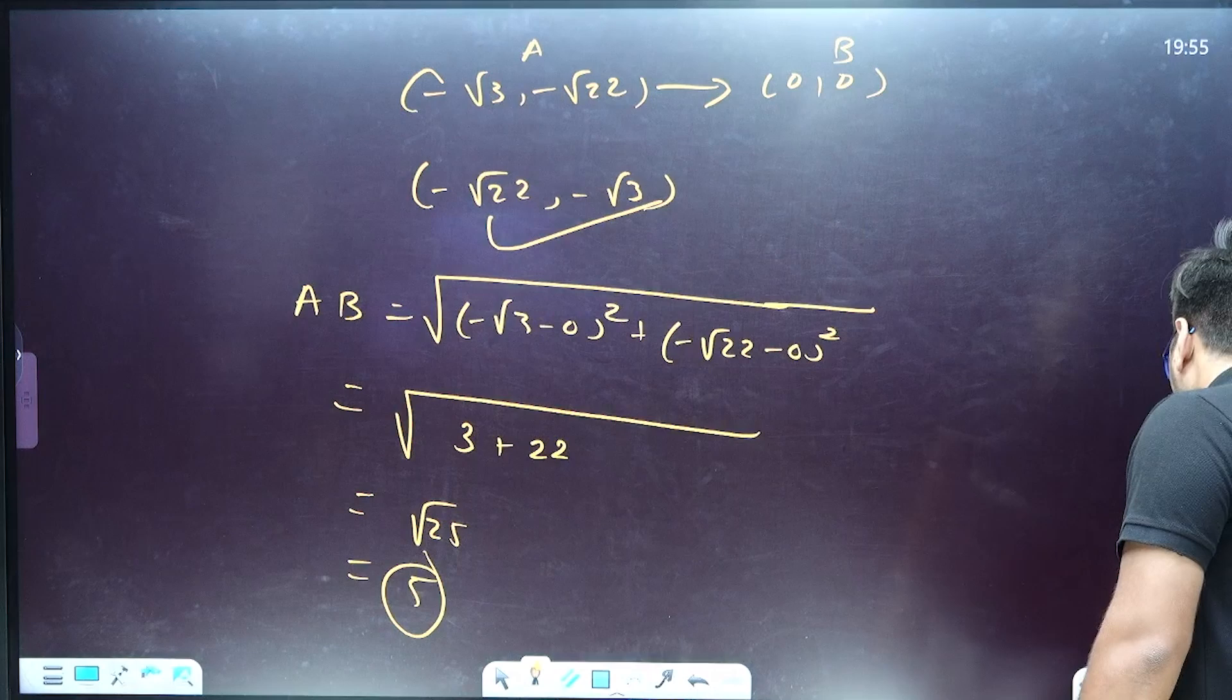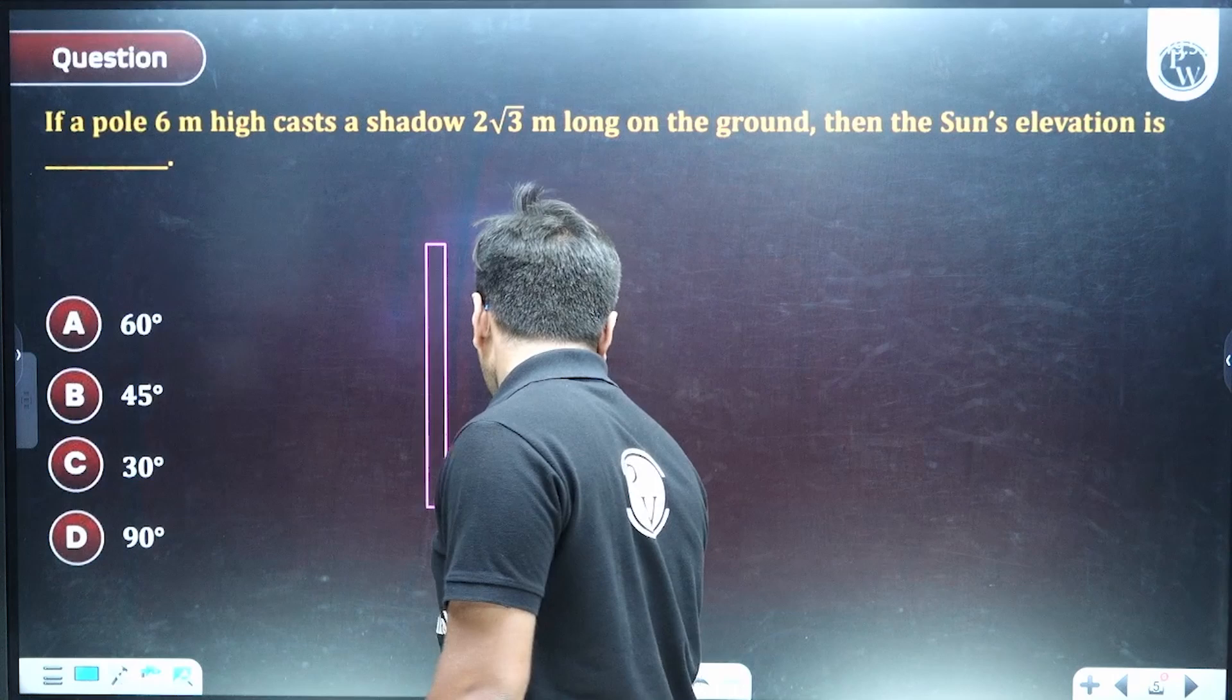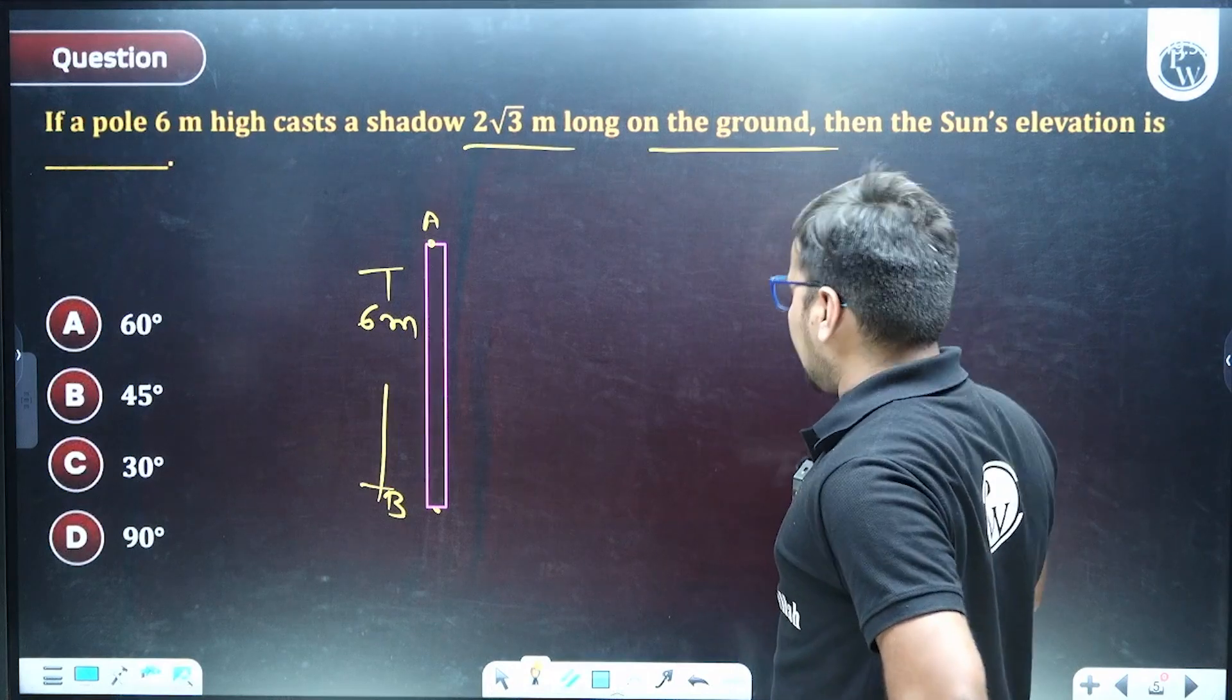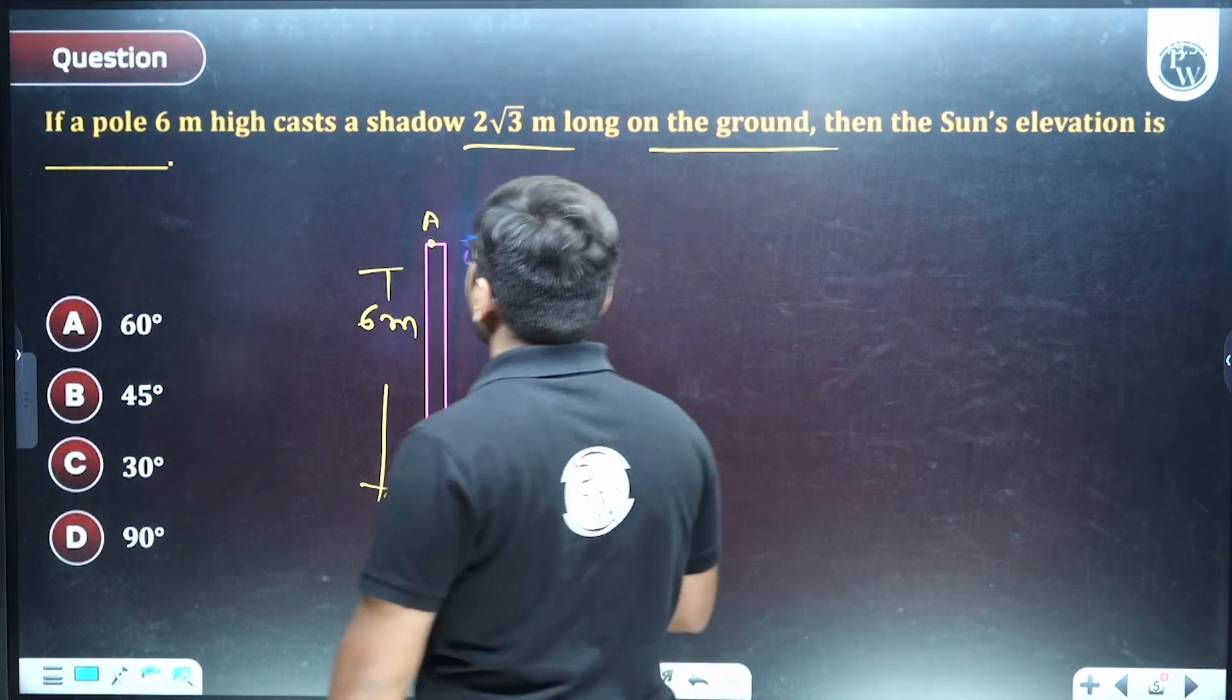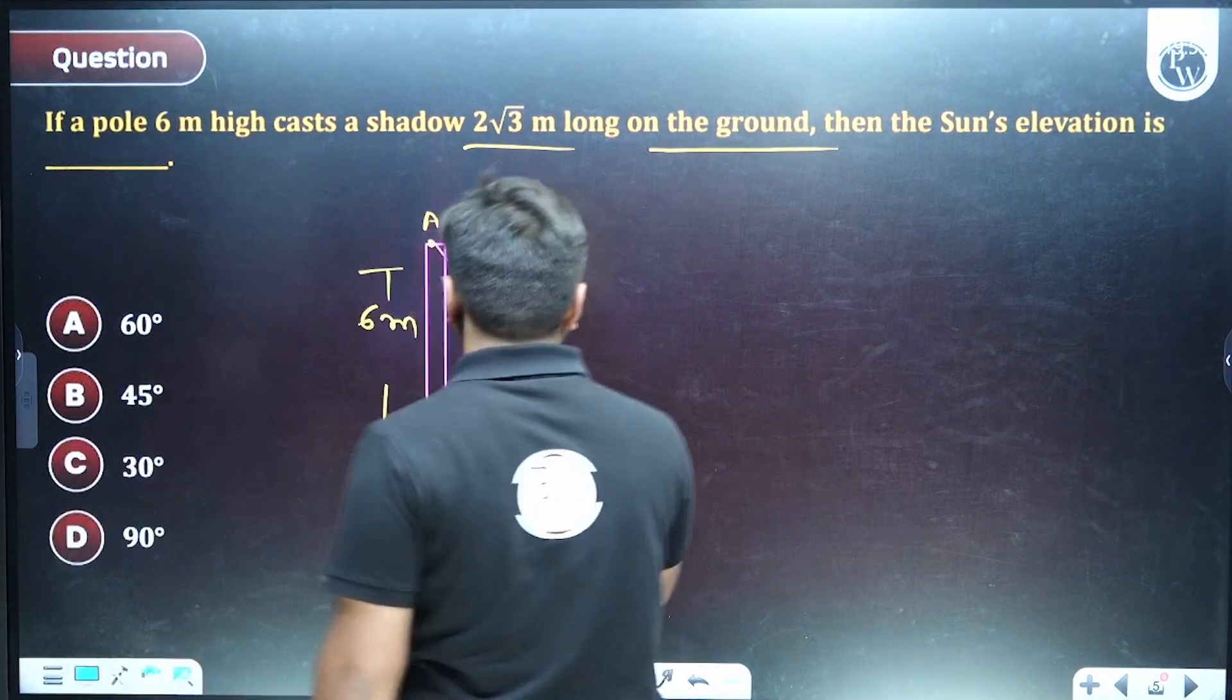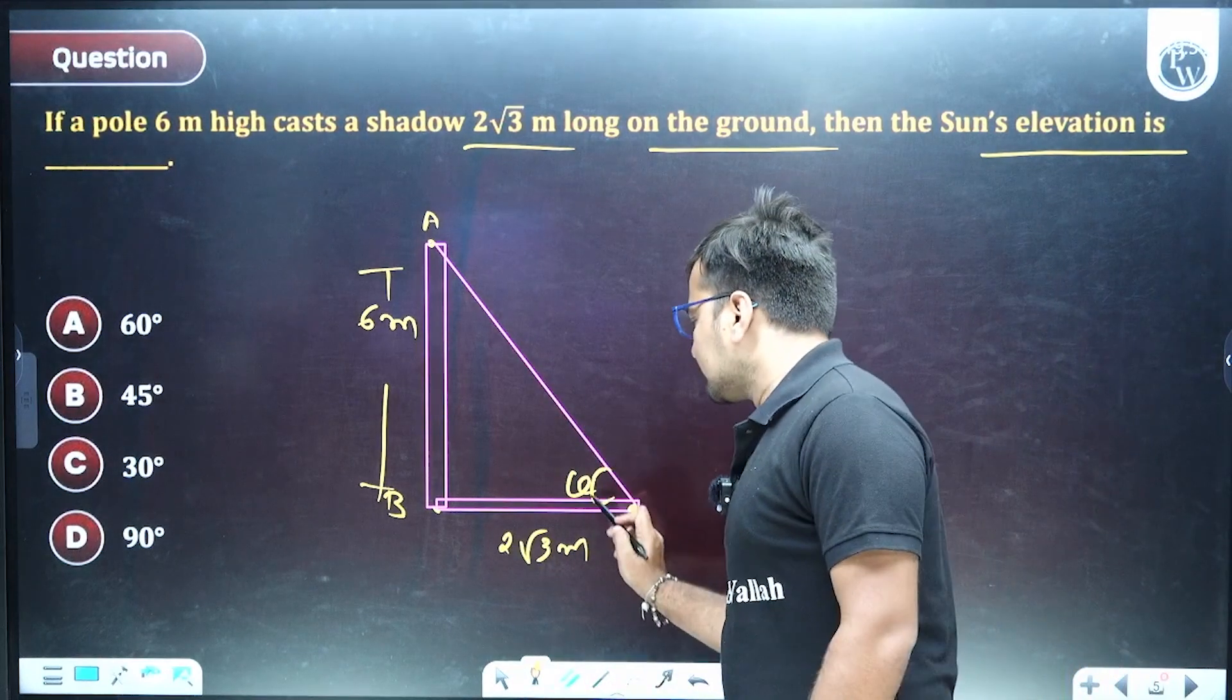Now for the third MCQ: if a pole 6 meters high, suppose this is your pole, give this pole name as AB. Its height is 6 meters already given, casts a shadow 2√3 meters long on the ground. Okay, so now it casts the shadow. We have to find the angle of elevation. This is your angle of elevation. Take this as point C and this is shadow length 2√3.